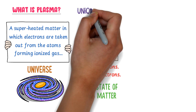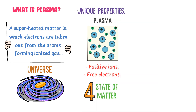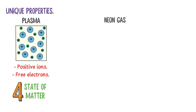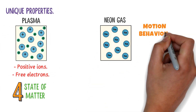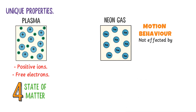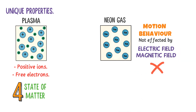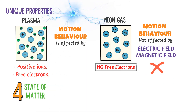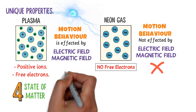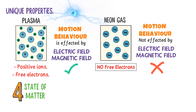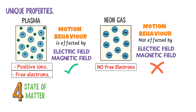Its behavior and properties are very unique from solid, liquid, and gas. There is a huge difference between gaseous state and plasma state. Motion and behavior of gaseous state is not affected by electric field and magnetic field, because gaseous state has no free electrons. While motion and behavior of plasma state is affected by electric field and magnetic field, because there are positively charged ions and free electrons present in it. Due to these unique behaviors, plasma is called the fourth state of matter.